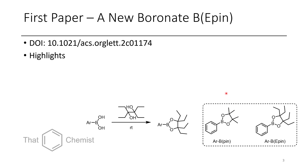The first paper I want to talk about from this month is making a new boronic ester group. If you've done any chemistry with palladium or other cross-coupling chemistry, you'll be familiar with B-pin groups — a boronic acid with a pinacol ester. In this paper, this group makes an E-pin group, which is like a B-pin but with ethyl groups instead of methyl groups. One way they prepare these is by treating a boronic acid with an ethyl pinacol derivative to get their pinacol ester.